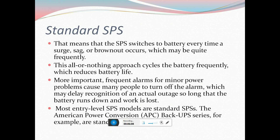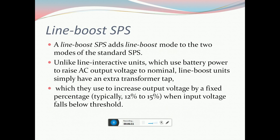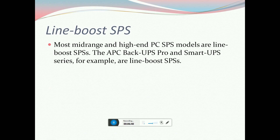A line boost SPS adds a line boosting mode to the two modes of the standard SPS. Unlike line interactive units that use battery power to raise AC output voltage, a line boost unit simply uses an extra transformer tap that increases output voltage by a fixed percentage — typically 12% to 15% — when input voltage falls below a threshold. Most mid-range and high-end PC SPS models, such as the APC Back-UPS and Smart-UPS series, are line boost SPSs.